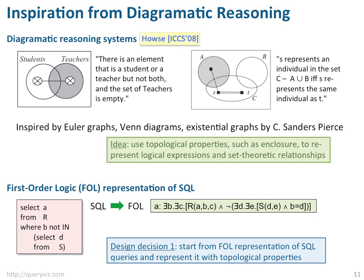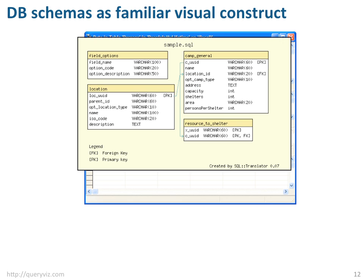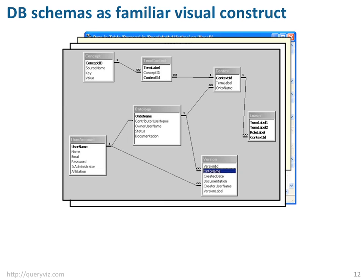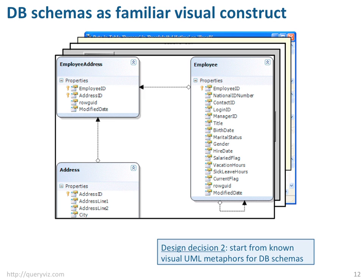So now we are in logic. Our first design decision is: we start from this logical representation of a SQL query and then try to represent it with topological properties. When it comes to visualizations, we are all more or less familiar with UML representations of database schemas. Our design decision 2 is: we start from these familiar visual database constructs for schemas, and a simple conjunctive query is not supposed to look much different from a database schema.